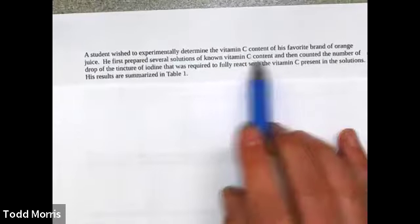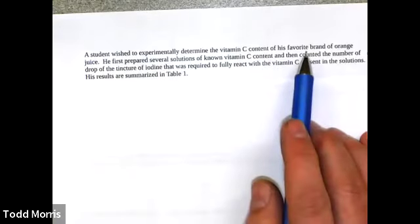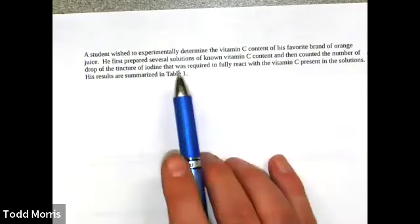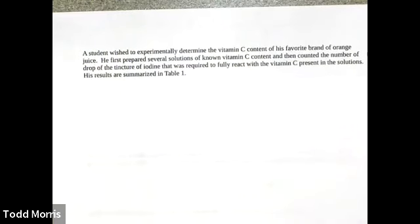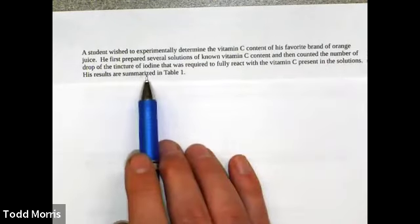Let's do an example calculation of the type you'll need to do for this week's lab. In this story, a student wished to determine the vitamin C content of his favorite brand of orange juice. To do this, he first prepared several solutions of known vitamin C content. From his chemistry class, he understood that vitamin C and iodine react with one another, so he counted how many drops of tincture of iodine were required to react with the vitamin C present in his known solutions. He summarized the results in Table 1.